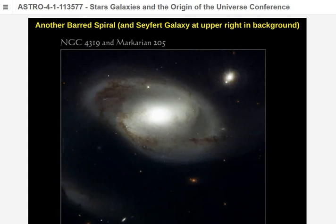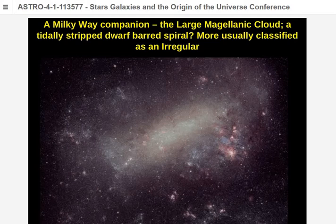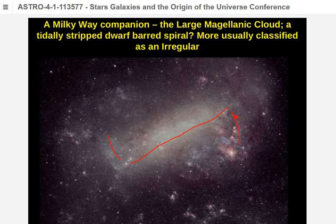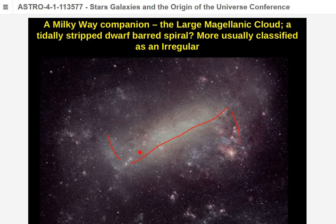There's also an active galaxy — notice how bright the central core is, way in the background. The Large Magellanic Cloud again: many astronomers think it's probably a bar galaxy whose arms have been yanked off by our Milky Way's gravity. It takes up a fist-width at arm's length in the southern hemisphere sky and is easily visible with the naked eye from Australia.